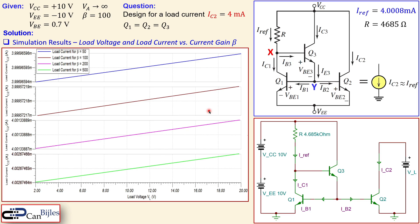This completes example two — the BJT current source using a beta helper, which is transistor Q3. This configuration is much better than the simple two-transistor current mirror in example one. The design can also be implemented using MOSFETs or other transistor types. Future videos will cover example three and other configurations including the Widlar and Wilson current mirrors.